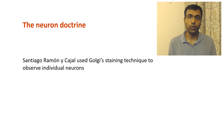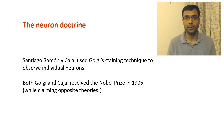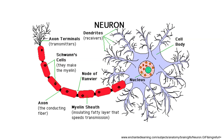Both Cajal and Golgi received the Nobel Prize in 1906 for their work on the brain, even though they were advancing competing theories. Now we know that Golgi was wrong and Cajal was right. The brain is indeed made up of neurons — in fact, billions of neurons. Although these neurons can vary quite a bit in terms of their shapes and sizes, they tend to have some common components.